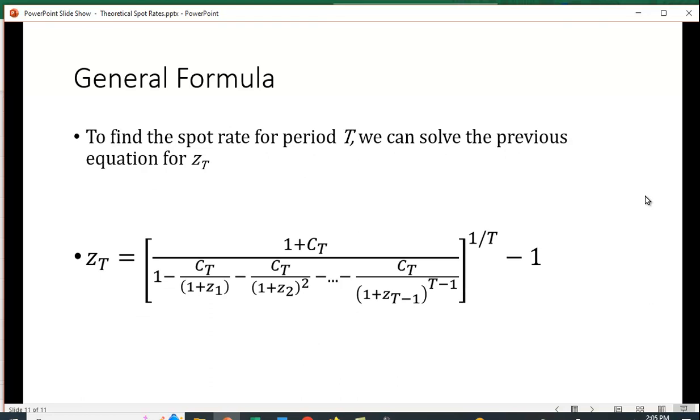What's the general formula? It's going to be one minus the present value of all the cash flows up to one period before the spot rate we're looking for, divided into one plus the coupon in period t, all raised to the one over t power minus one.